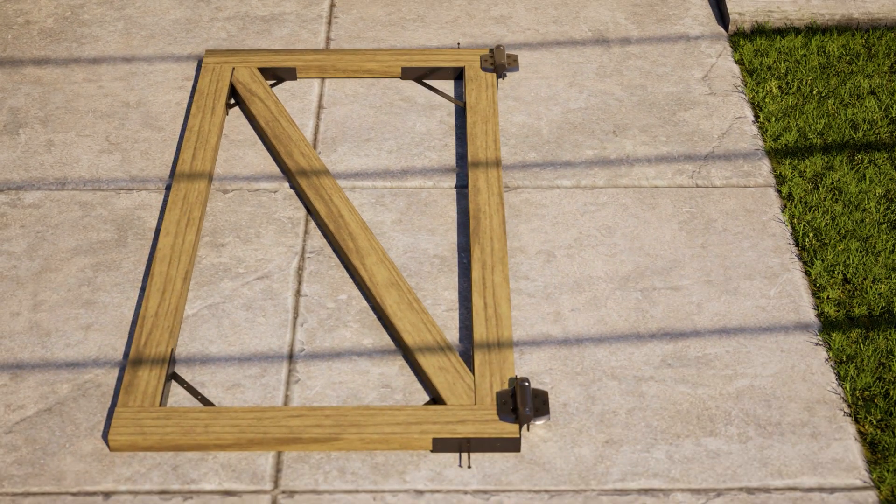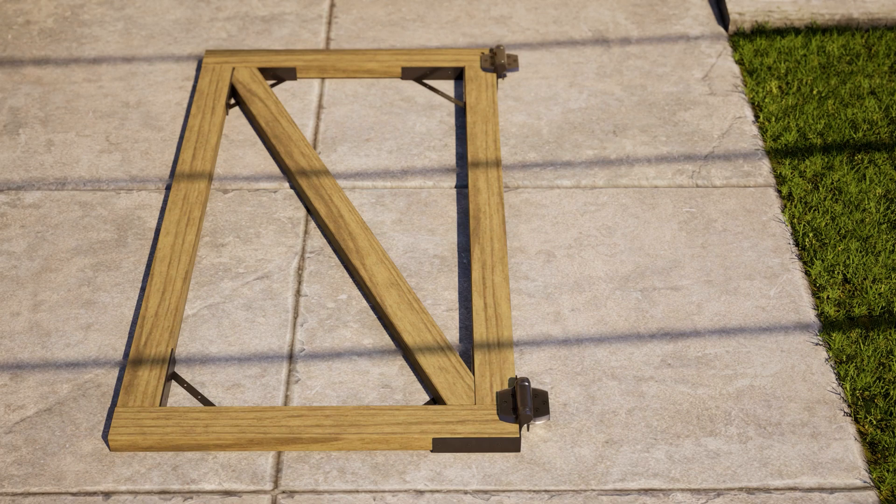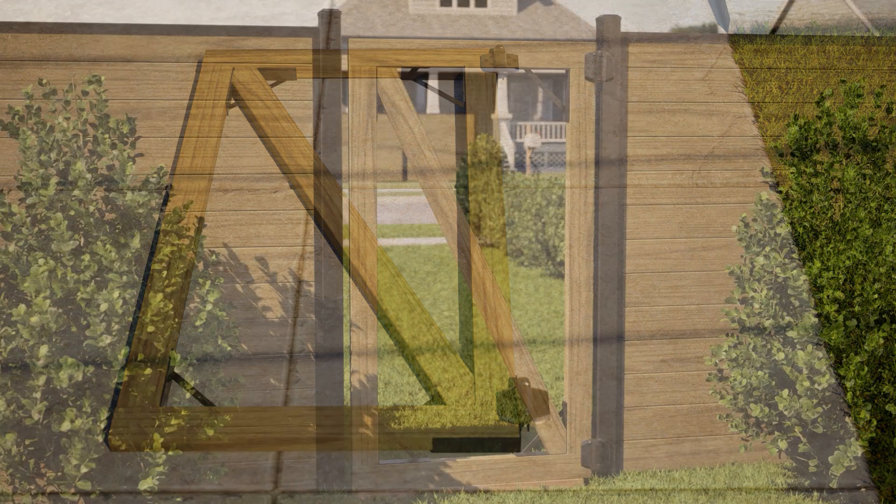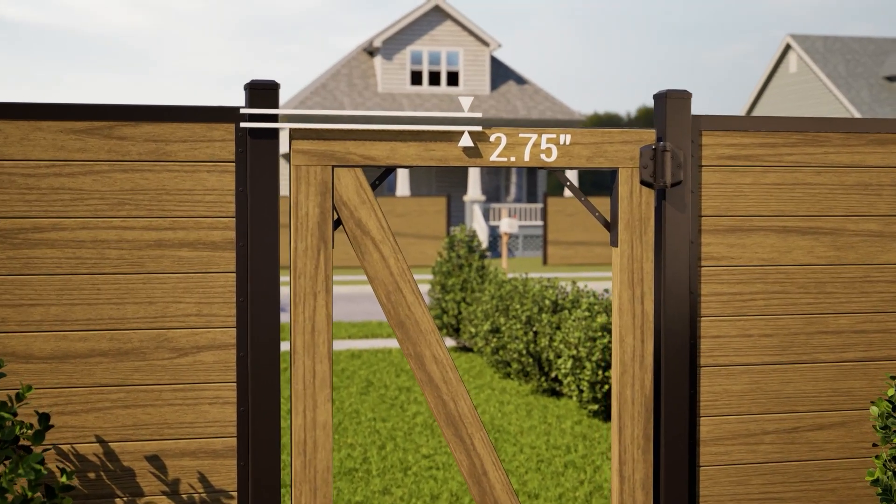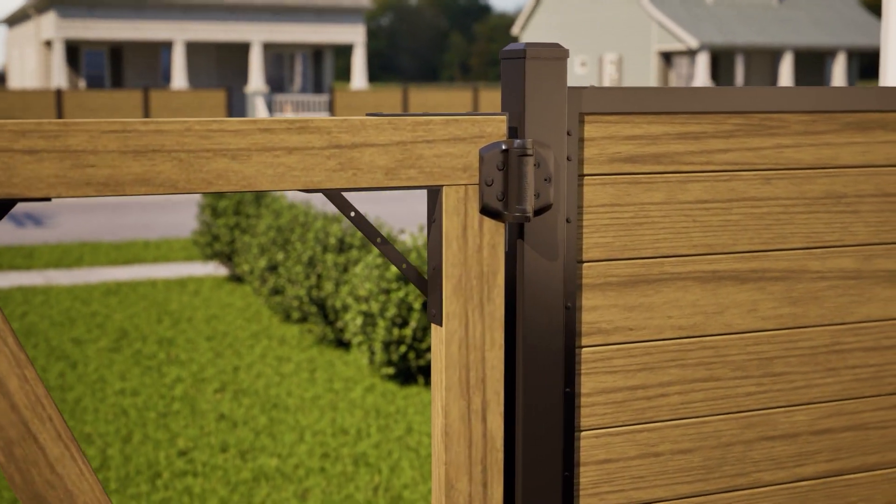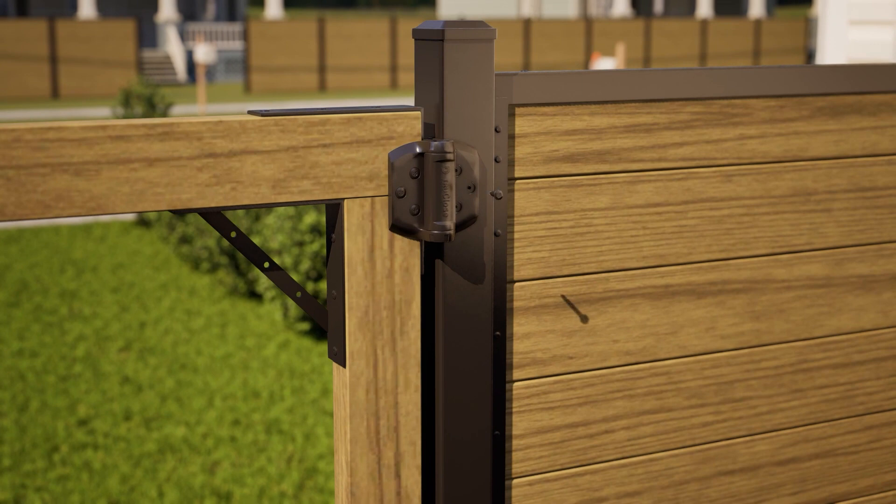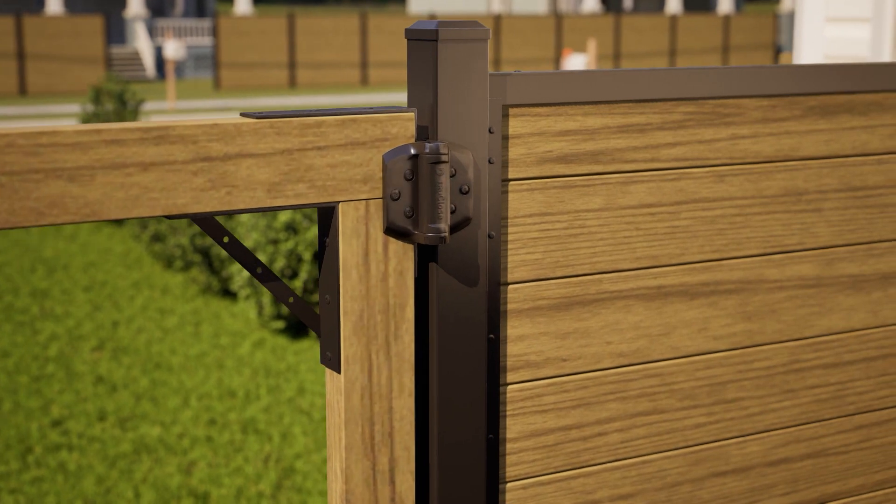Then screw in the face of the hinge to the frame, filling the screw holes in the hinges to the wood frame. For a horizontal gate, align the top gate frame rail 2 ¾ inches below the top of the top board of your fence line and attach the frame to the gate with the self-drilling screws provided.